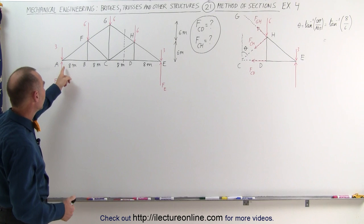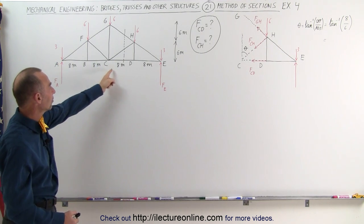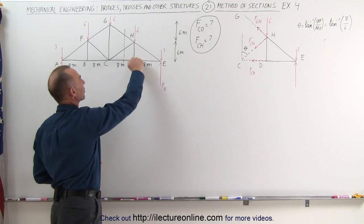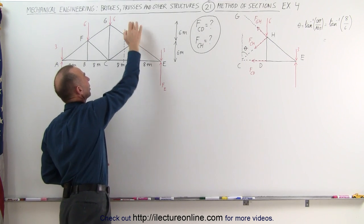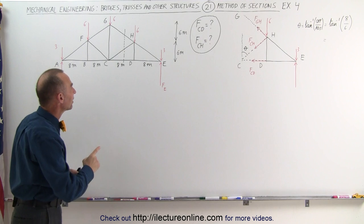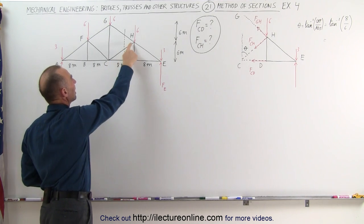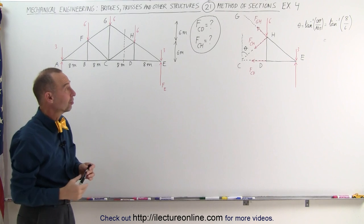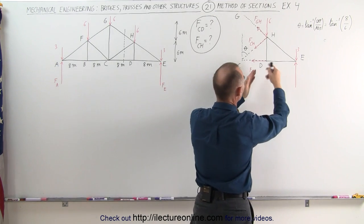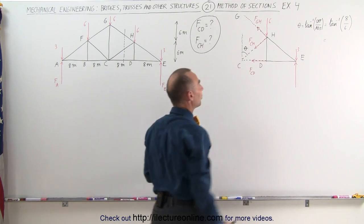Notice the dimensions: it's 8 meters from A to B, from B to C, C to D, and D to E. It's 6 meters vertically in two places, so it's a large structure. We're trying to find the force between C and D, and C and H, and we're going to use the method of sections. Here's the section drawn out in order to accomplish finding the forces on those two members.